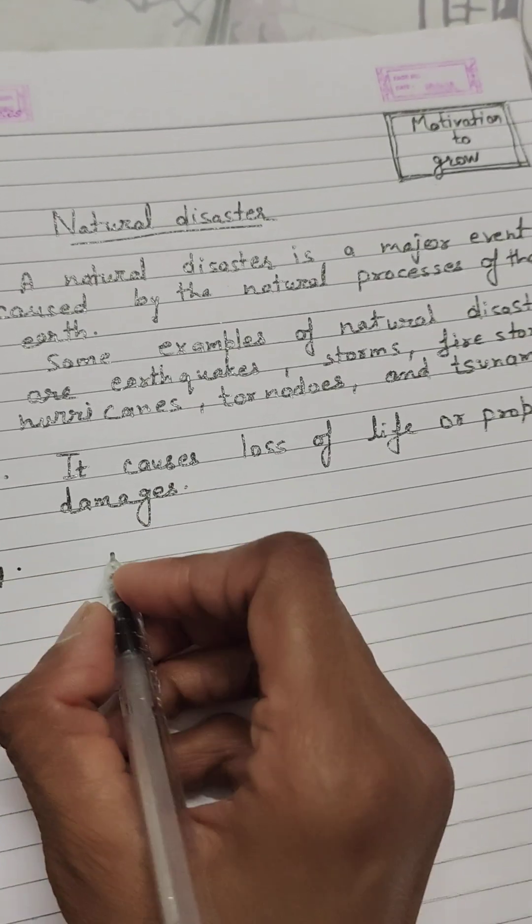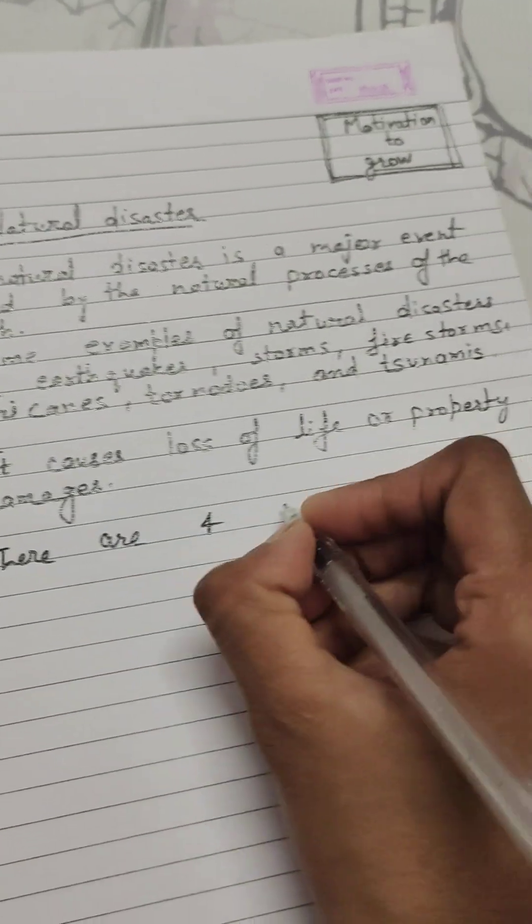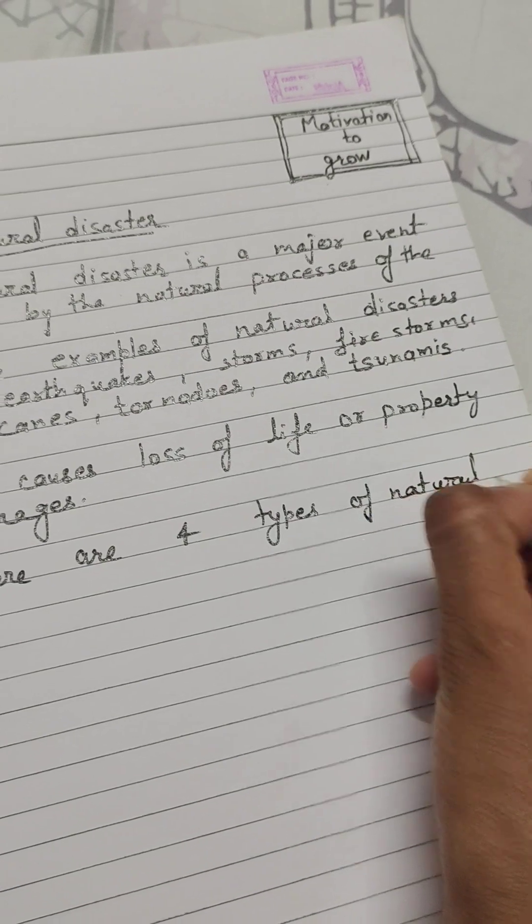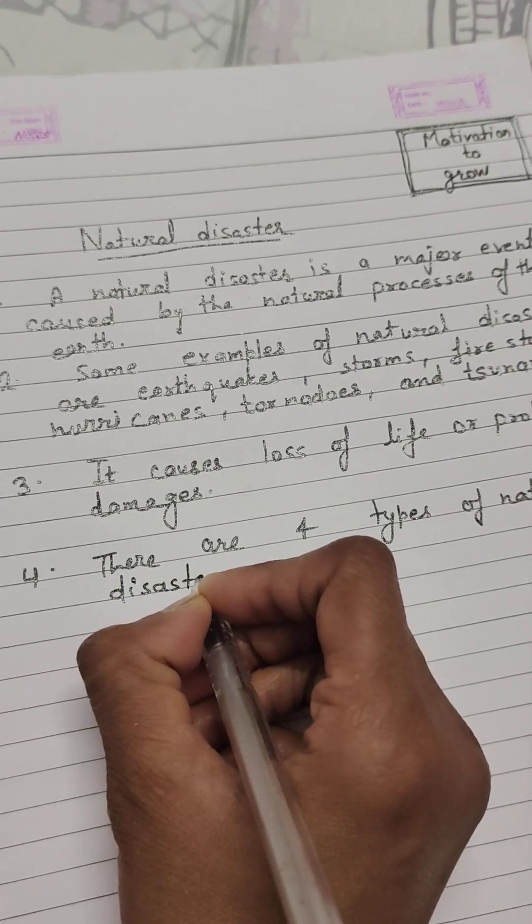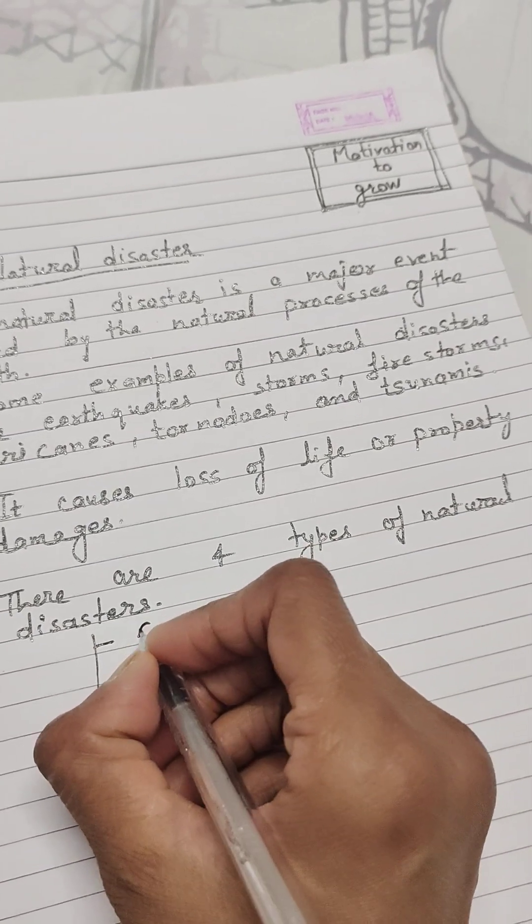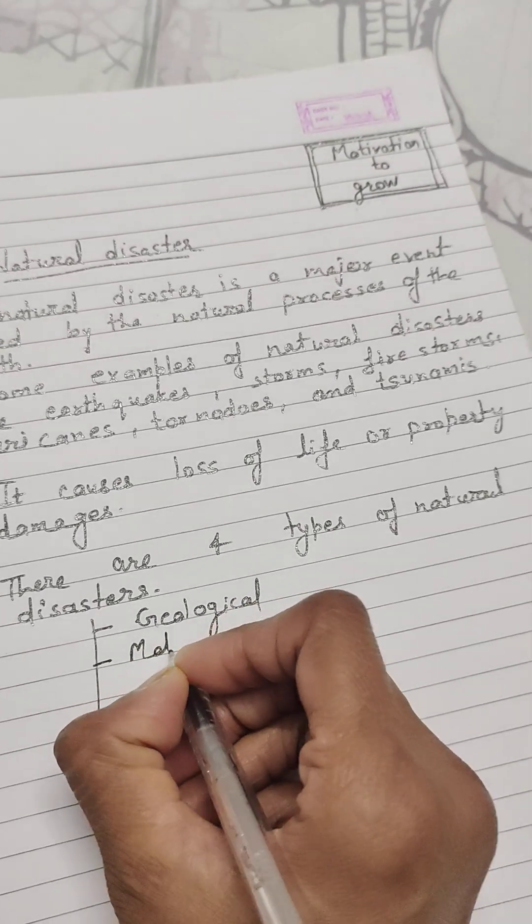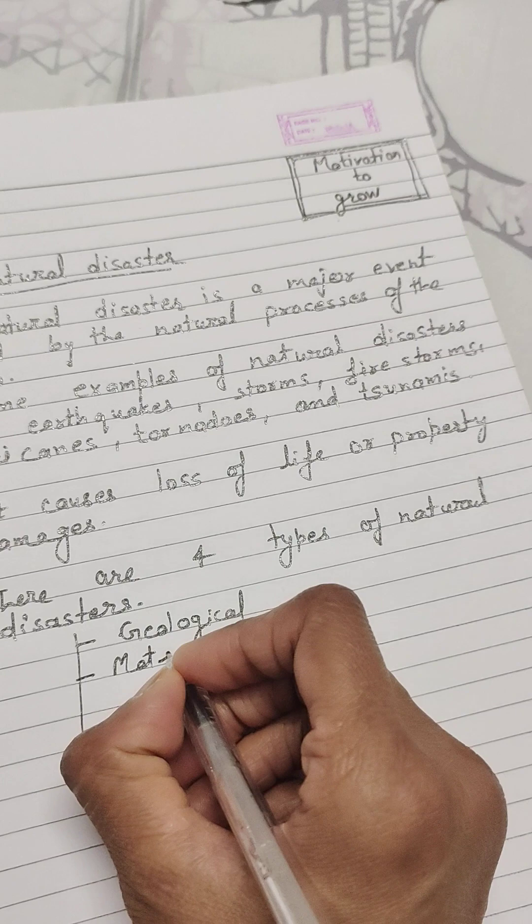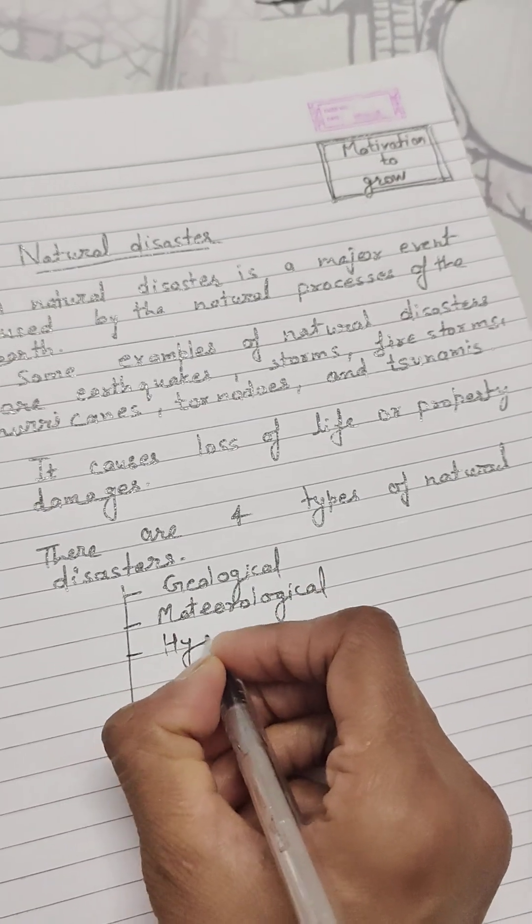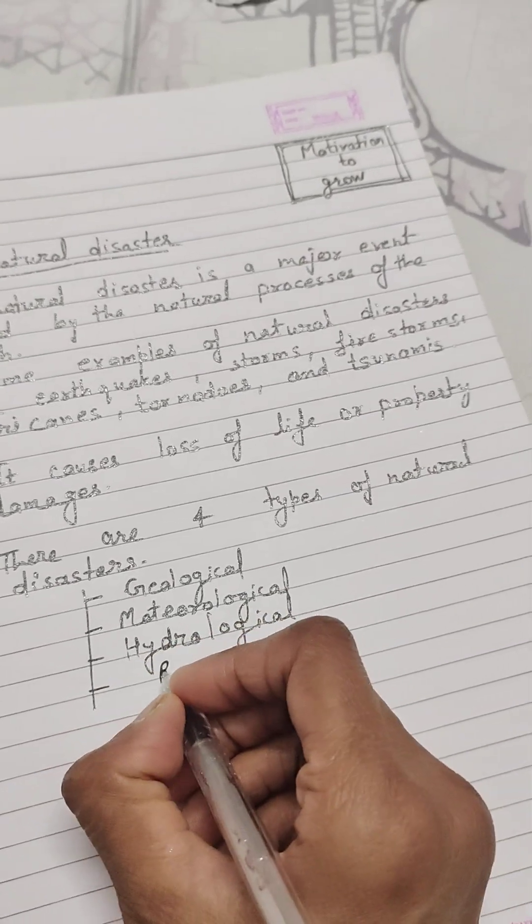Fourth point is, there are four types of natural disasters. One, geological. Second is, meteorological. Third is, hydrological. And fourth is, biological.